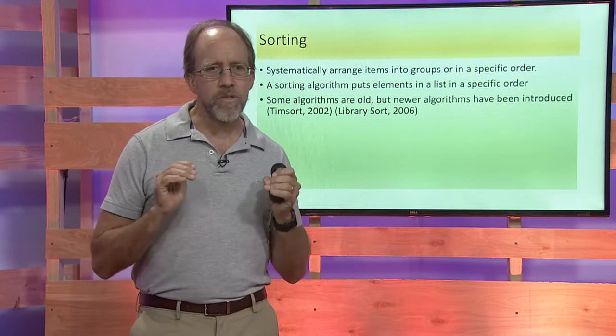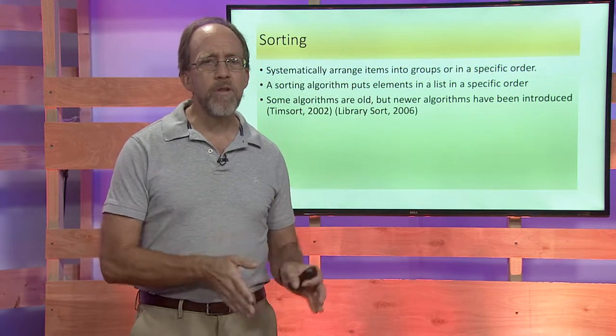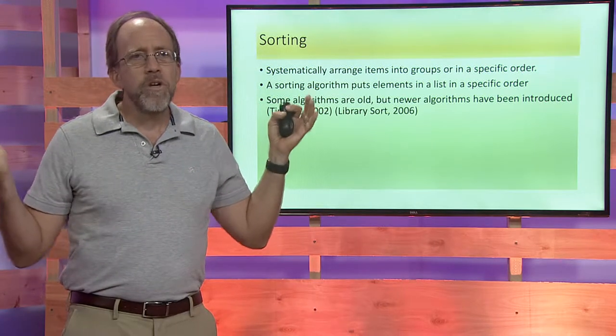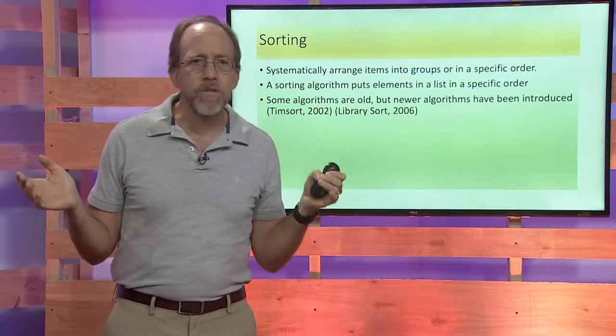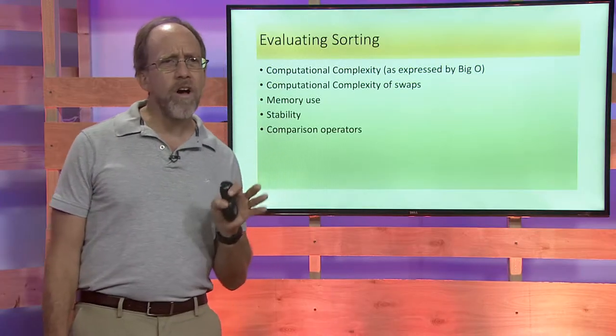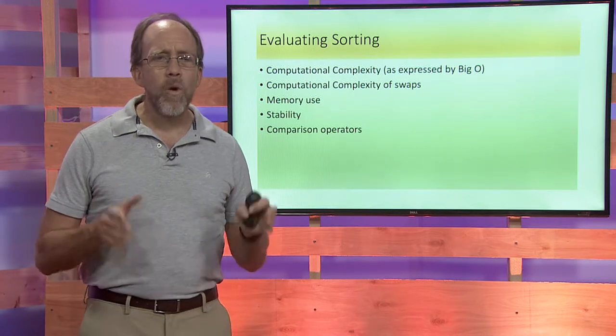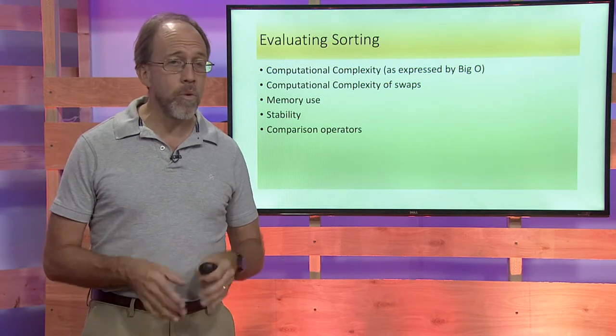Sorting itself is really just being able to put things in a specific order, and you do it all the time. Sorting is something that people just inherently do. You put things in alphabetical order. It's a normal function of life. However, when we're talking computer science, we're talking about how to do it fast and how to do it reliably. So let's talk about how you're going to evaluate what algorithm to use.